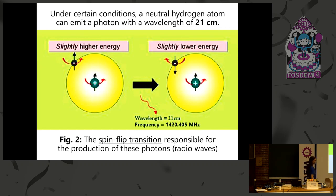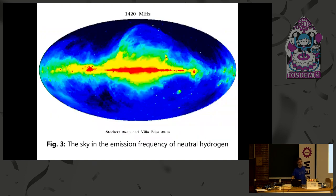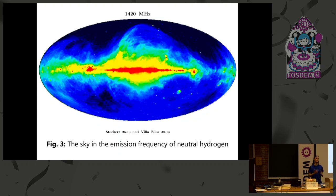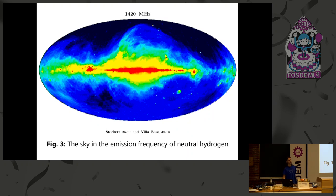Under certain conditions, a neutral hydrogen atom can emit radiation — a photon with a wavelength of 21 centimeters. It's called the spin flip transition, which is responsible for the production of these waves. As you know, our galaxy is full of hydrogen, so we can detect these spiral arms. This is an old sky map, and in the center we have the Milky Way, hence why it's so bright at 420 megahertz, which corresponds to a wavelength of 21 centimeters. So we wanted to build a radio telescope that can detect this very faint radiation and make it available to everyone to use online for free, without any registration, advertisements, or anything like that.